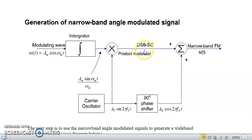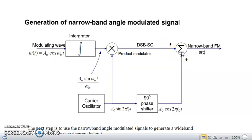This double sideband suppressed carrier signal from the product modulator then has to be summed with the cosine carrier frequency signal.